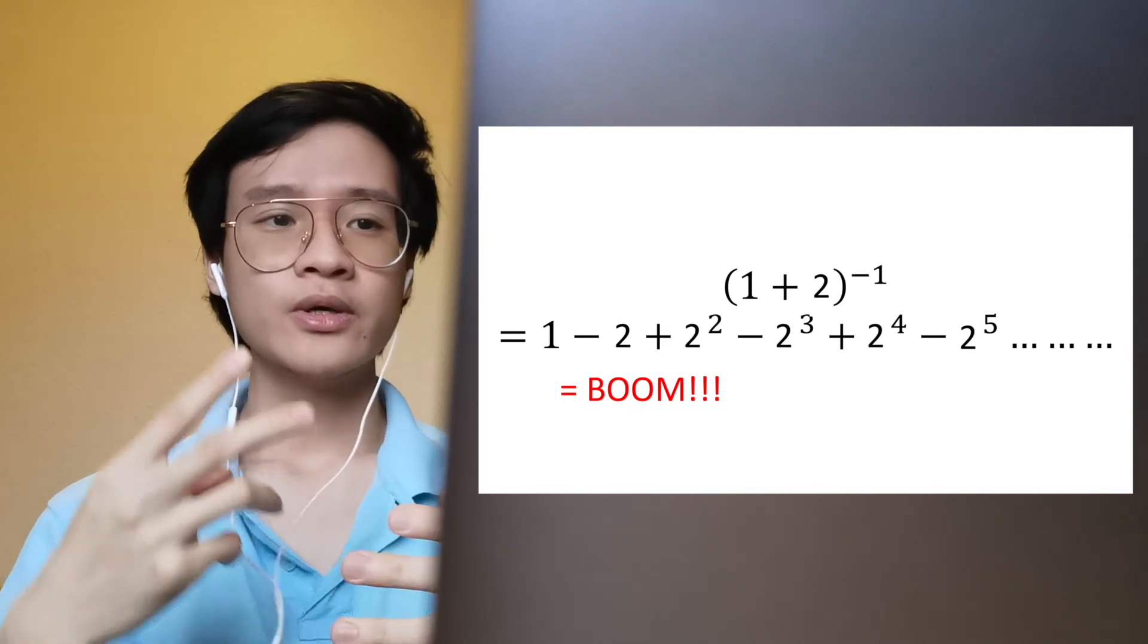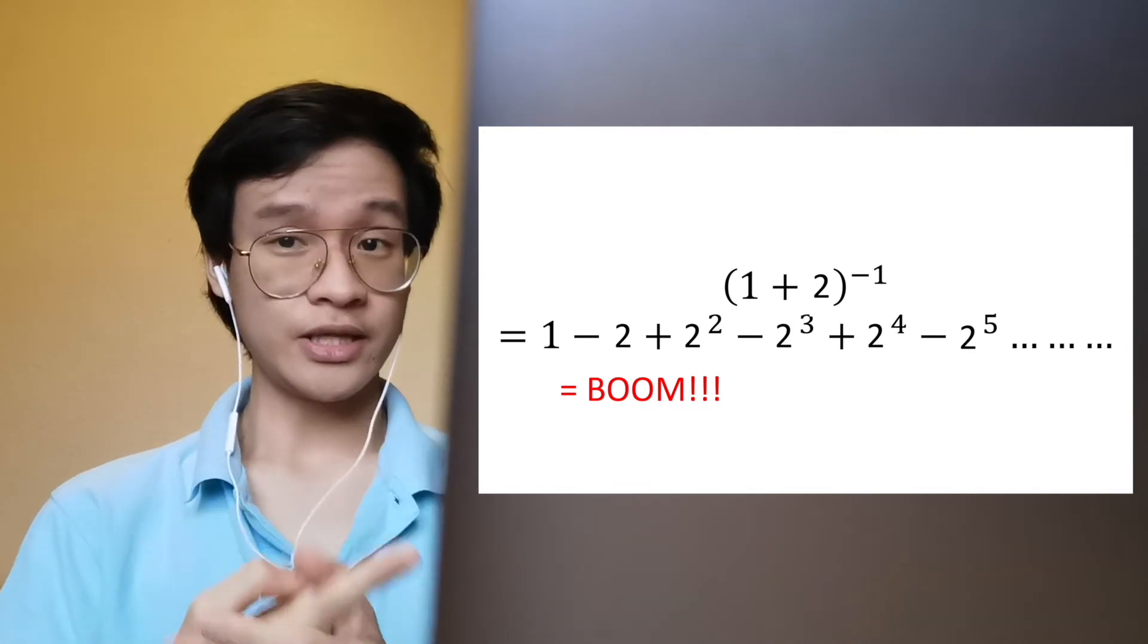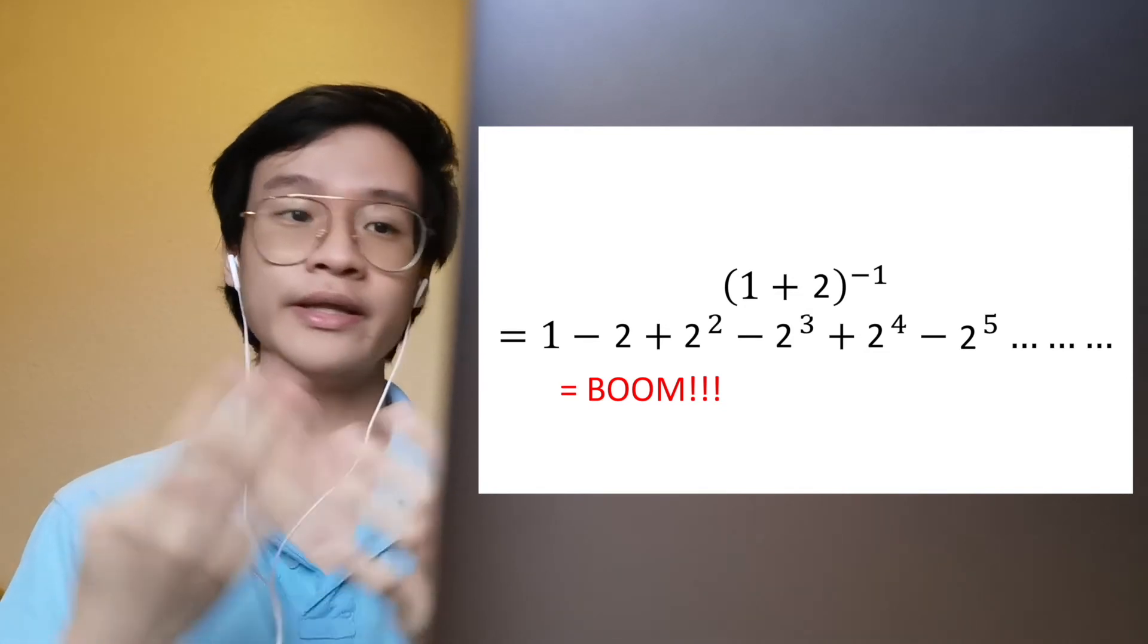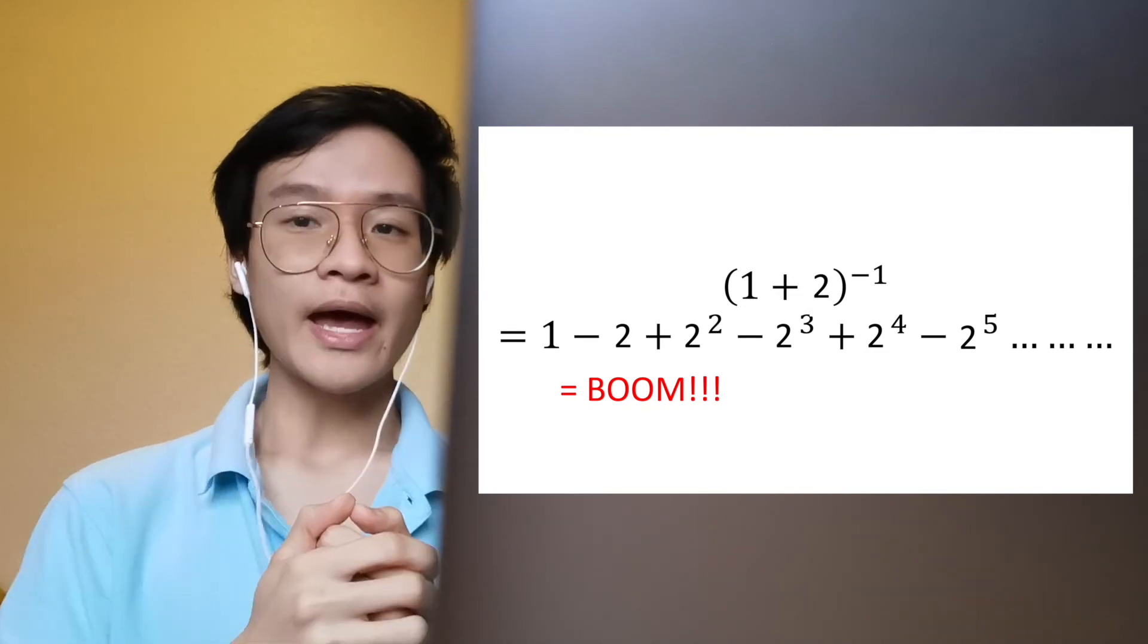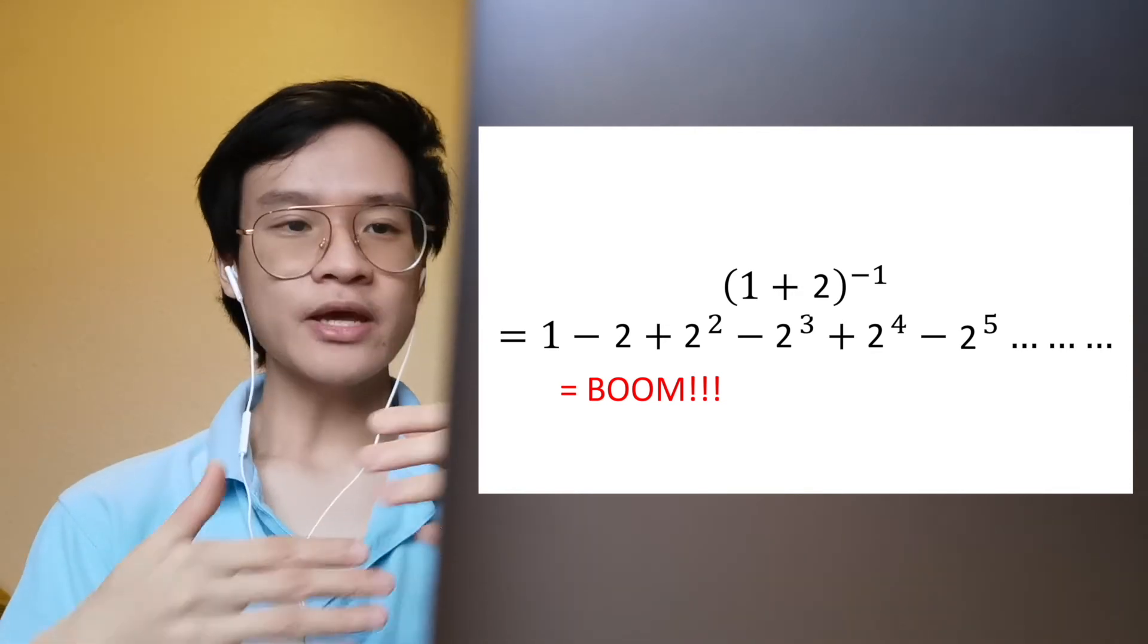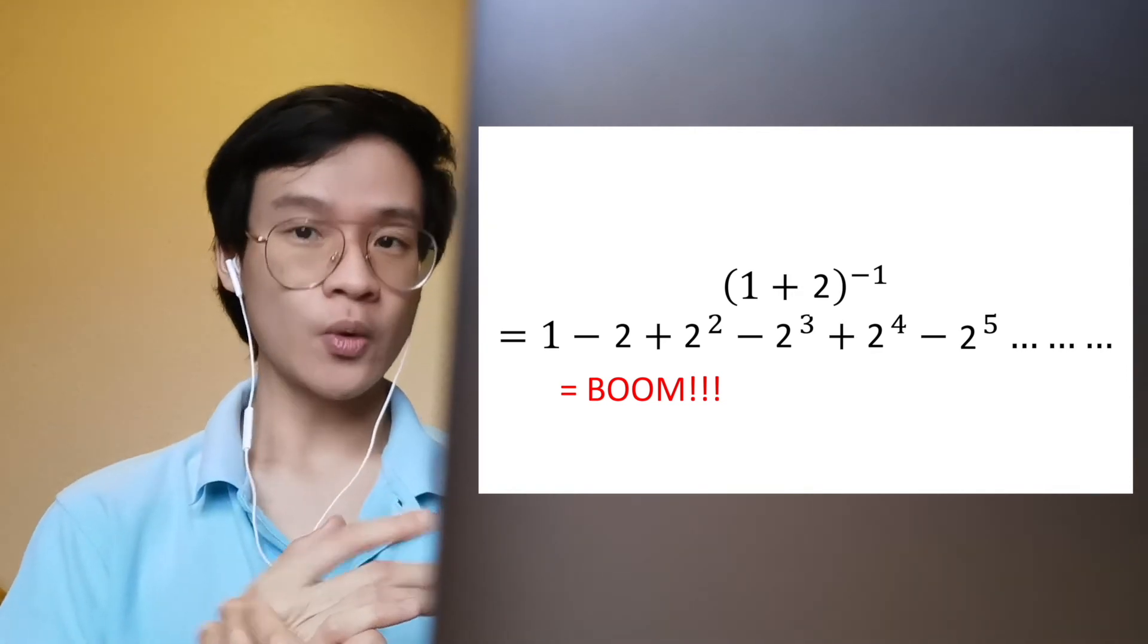So 1 is an integer, -2 is an integer, 4 is an integer, -8 is an integer, and so on. Each term will get numerically bigger, hence it will not converge to 1/3 or 0.333333...